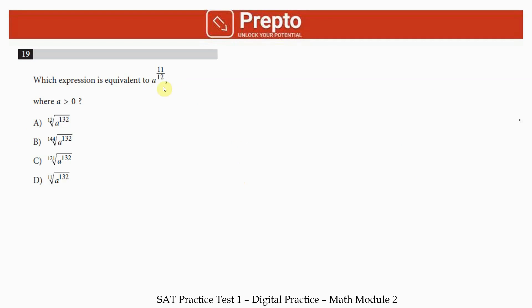Question 19 is on indices. You have to find which expression evaluates to a raised to 11 by 12. Let's go through some basic indices: when you have x and this radical symbol, this means it is the fifth root of x, which is x raised to 1 by 5. To generalize, this symbol means it is the yth root, which means x raised to 1 by y. Keeping this in mind, let's look at options.